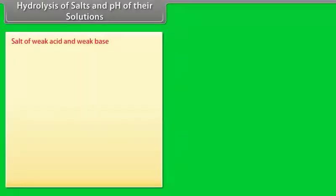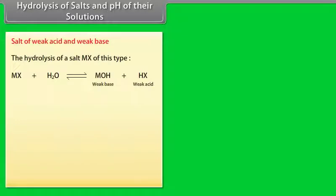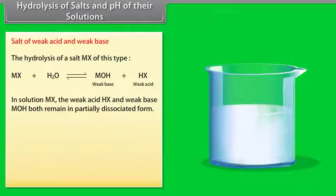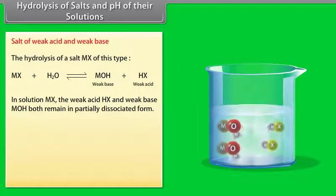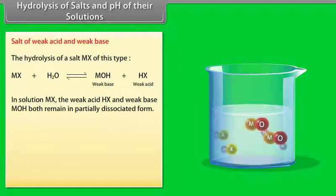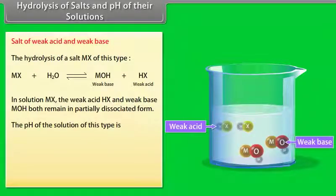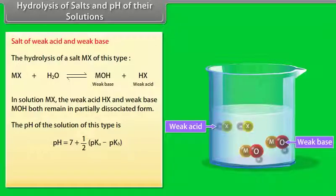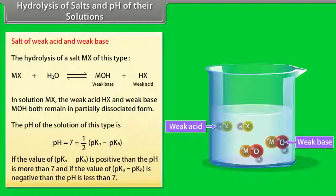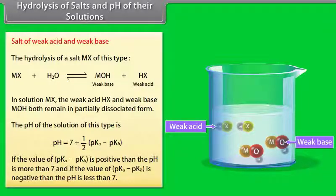For a salt of a weak acid and a weak base: both the weak acid HX and weak base MOH remain in partially dissociated form. The pH is given by: pH = 7 + ½(pKa − pKb). If pKa − pKb is positive, pH is more than 7; if negative, pH is less than 7.